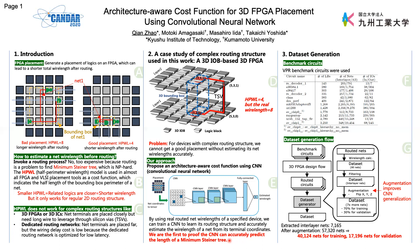To generate a dataset for CNN training and validation, we used several VPR benchmark circuits widely used in FPGA research, and implemented them with our previously developed 3D FPGA design flow. After routing, we calculated the actual routed wire length of all nets and extracted interlayer nets only, since inner-layer nets do not use TSVs and their placement is equivalent to 2D FPGAs. We then performed data augmentation by flipping X, Y, and Z coordinates to improve CNN generalization. Finally, 70% of the data was used for training and 30% for validation.